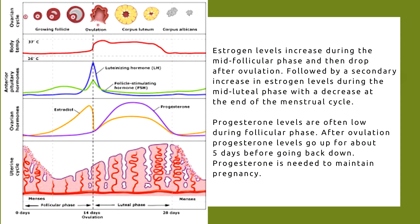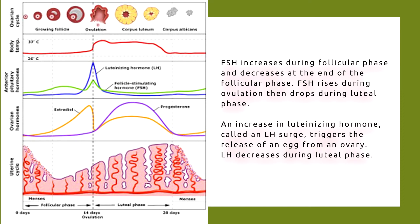Progesterone levels are often low during the follicular stage, but after ovulation, progesterone levels go up for about 5 days before going back down. FSH increases during the follicular phase since it is needed for follicle growth, and decreases at the end of the follicular phase. FSH rises again during ovulation then drops during the luteal phase. LH increases during the ovulation period, stimulating ovulation which usually occurs 16 to 32 hours after the surge begins, then LH decreases during the luteal phase.